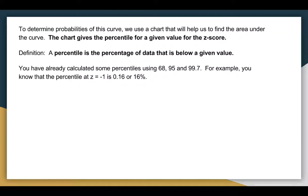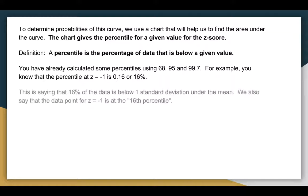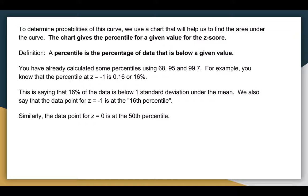So the percentile at z equals negative 1 is 16%. So that's a new definition there. We've had quartile and Q1 and Q3. It's kind of related to that. These percentiles are more specific, not just 25 and 75. This is saying that 16% of the data is below negative 1, so it's at the 16th percentile. Z equals 0 is at the 50th. Z equals 1 is at the 84th, because 84% is lower.